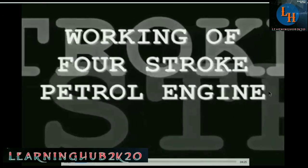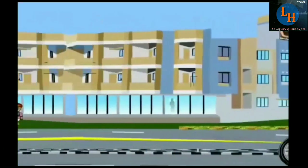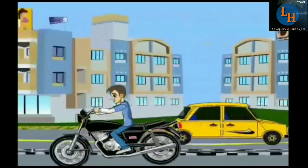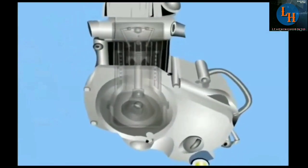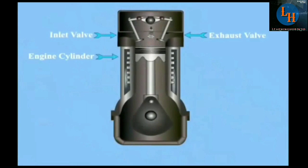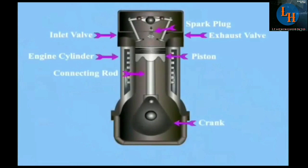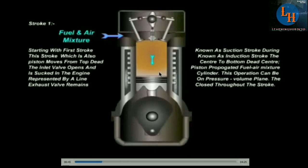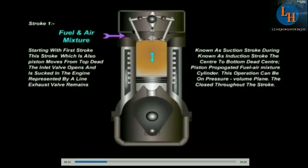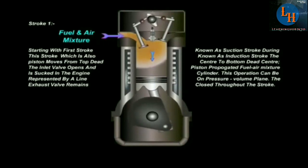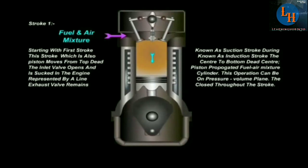Working of the four-stroke petrol engine. In an actual bike, a 100 to 150 cc volume is typically available — that is the volume of the cylinder measured in cc. Air and fuel mixture will enter here. The piston moves from top to bottom dead center, and the cam mechanism operates the valves. This is called the suction stroke.